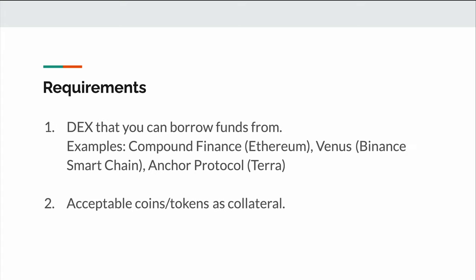So in order to put on a leveraged trade or trade on margin, you'll need two things. The first is a decentralized exchange that will actually allow you to borrow funds — not all exchanges will allow for this, and this is why I said that this method of leverage trading isn't perfect. Some examples of DEXs that will allow you to borrow funds include Compound Finance for Ethereum, Venus for Binance Smart Chain, and Anchor Protocol for Terra.